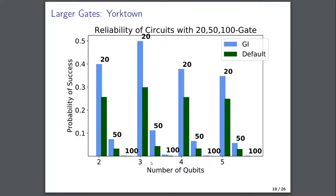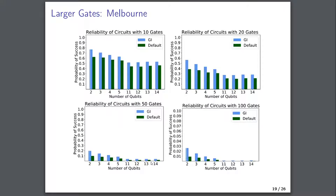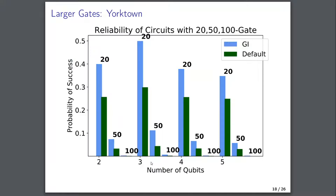For Yorktown with larger gates, as before, 2 qubits perform much worse. But the 3, 4, 5 general downturn can still be seen, with our method performing well overall.